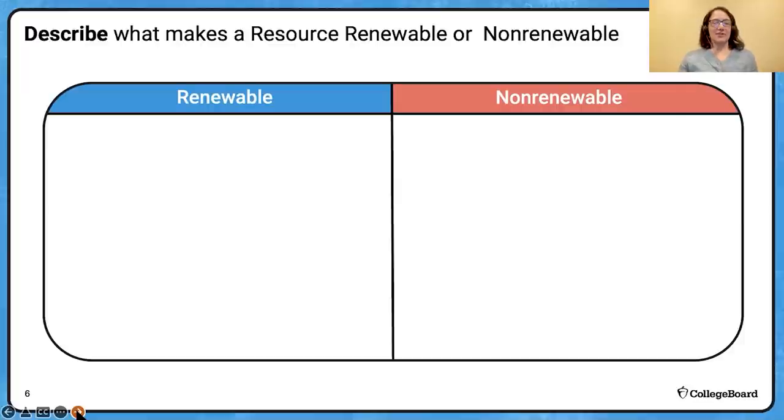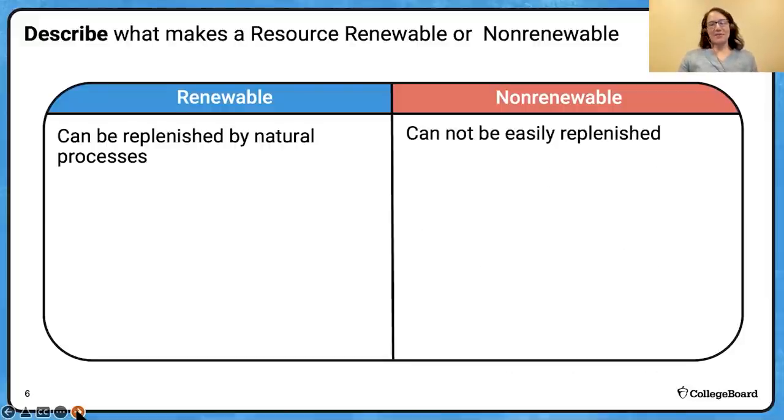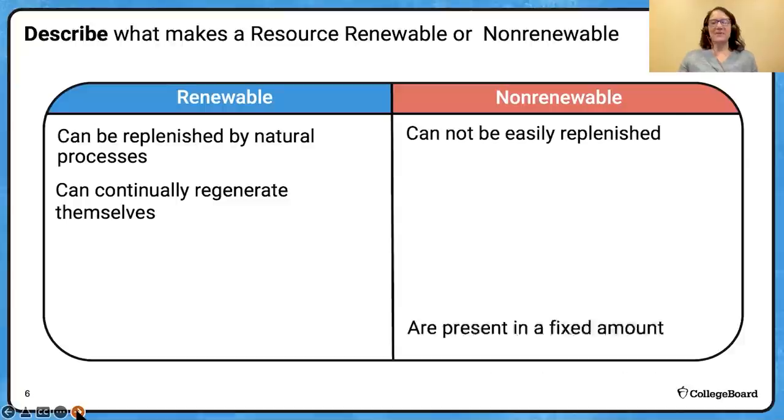Let's start with describing what makes a resource renewable or non-renewable. Renewable resources can be replenished by natural processes. They can be restocked. Non-renewable resources cannot be replenished. The processes that made those took so long, it's measured on the geologic time scale, that on a human time scale, we're not going to get those replenished. Renewable resources can continually regenerate themselves. Trees can regrow. Non-renewable resources are present in a fixed amount. Once we use them up, they're gone.